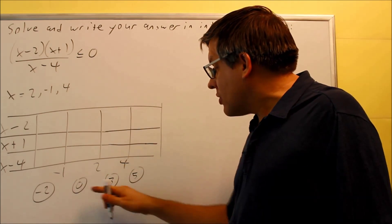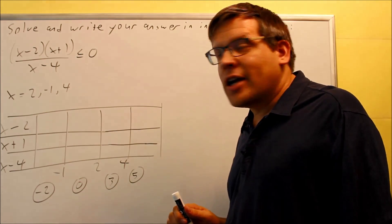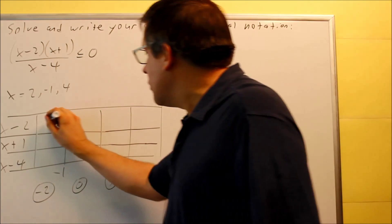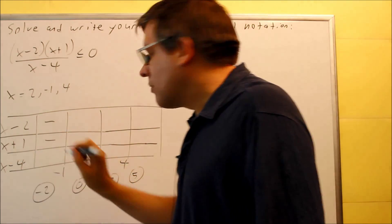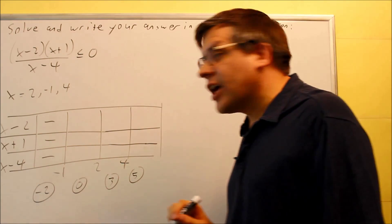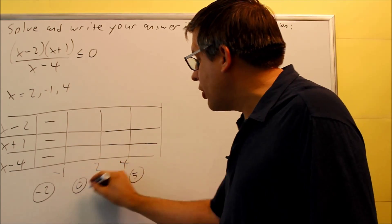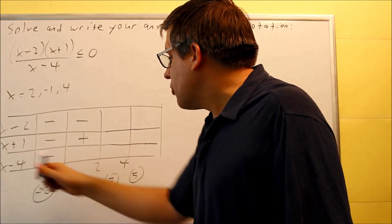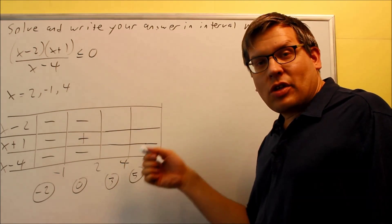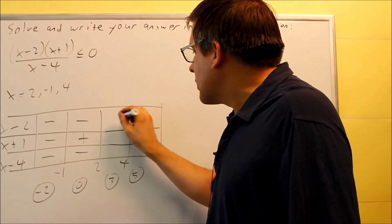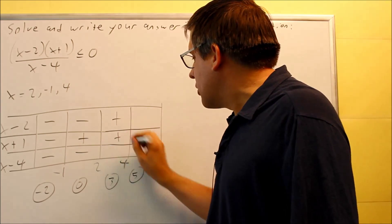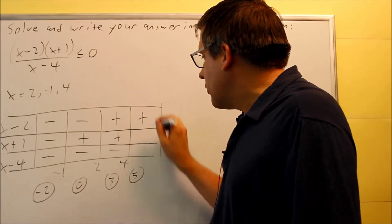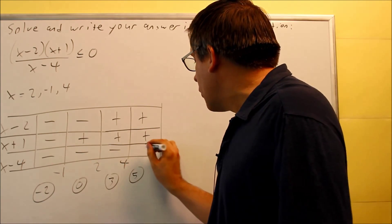These test numbers go into the factors on the left-hand side — I'm only indicating whether I get a positive or negative. Negative 2 minus 2 is negative; negative 2 plus 1 is negative; negative 2 minus 4 is negative. Testing 0: 0 minus 2 is negative; 0 plus 1 is positive; 0 minus 4 is negative. Testing 3: 3 minus 2 is positive; 3 plus 1 is positive; 3 minus 4 is negative. Testing 5: 5 minus 2 is positive; 5 plus 1 is positive; 5 minus 4 is positive.